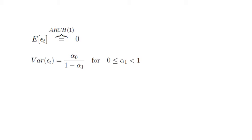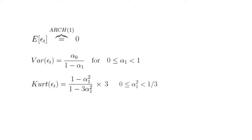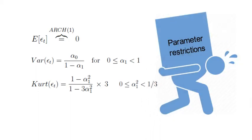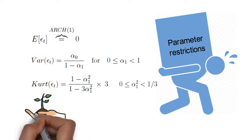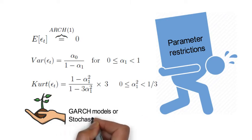If you look at the variance expression, you note that alpha_1 needs to be further restricted — alpha_1 cannot be 1 or larger, otherwise you won't have a finite variance. I also want to show you that the kurtosis equals a specific expression. The more complex the ARCH models, the more parameter restrictions you end up with, and the less convenient it becomes to work with ARCH models in practice. One way to overcome this is to use GARCH or stochastic volatility models.